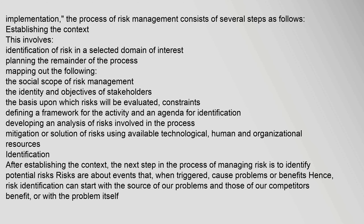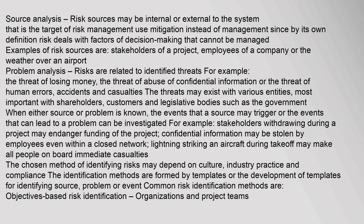After establishing the context, the next step in the process of managing risk is to identify potential risks. Risks are about events that when triggered cause problems or benefits. Risk identification can start with the source of problems — internal or external to the system. Examples of risk sources include stakeholders of a project, employees of a company, or the weather over an airport. Risks are also related to identified threats, such as the threat of losing money, abuse of confidential information, or human errors, accidents, and casualties.